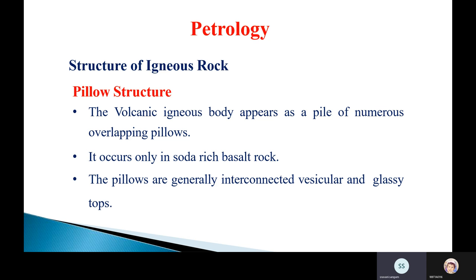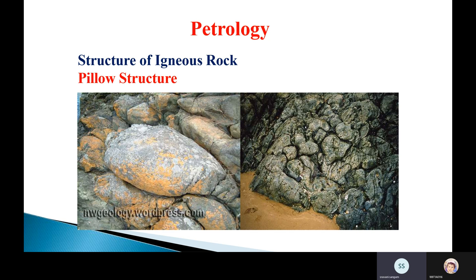The next structure is pillow structure. A volcanic igneous body appears as a pile of numerous overlapping pillows. It occurs only in soda-rich basalt rocks. Pillows are generally interconnected, vesicular, and have glassy tops. Pillow structure is observed in basalt-type rocks.